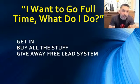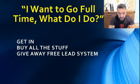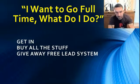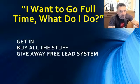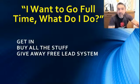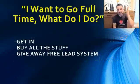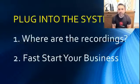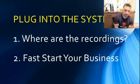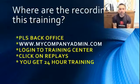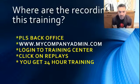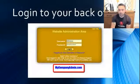If you want to go full-time quicker with less hassle, you have to get your mindset to accept doing these three things: get in, buy all the stuff, and start giving away the free lead system. That's how you go full-time. For new affiliates, I want to show you where the recordings of all these trainings are and fast-start your business. They're in your Power Lead System back office — log in at mycompanyadmin.com, click on the training center, then click on Replays. That gives you 24-hour access to all training.